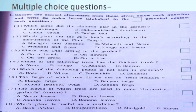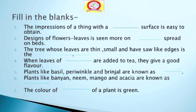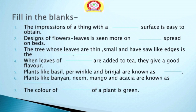Question two: fill in the blanks in each sentence with an appropriate word. First: the impressions of things with a dashed surface is easy to obtain. I have taught you this in this lesson and I think you know this answer. Question two: designs of flowers, leaves, is seen more on dash spread on beds.